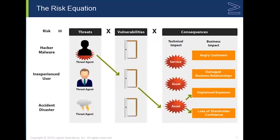One way to perform a risk equation — what I like to call a back-of-the-envelope equation — is to say that risk equals threats times vulnerabilities times consequences. For example, a hacker tries to use malware to take advantage of a vulnerability on our web server. The threat is the hacker, the vulnerability is the software the web server is running, and the hacker uses malware to exploit that. The consequences might be taking the resource down, causing an unplanned outage, or a loss of customer access to the web server.